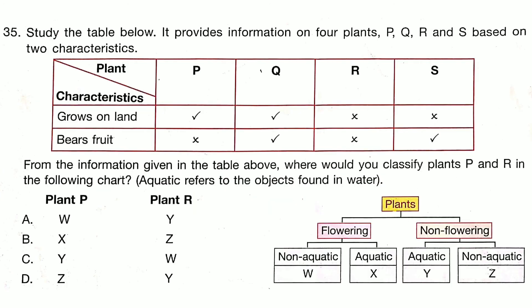Study the table below. It provides information on four plants — P, Q, R and S — based on two characteristics. From the information given in the table, where would you classify plants P and R in the following chart? Answer is Option D.